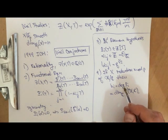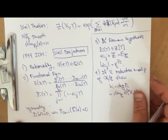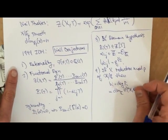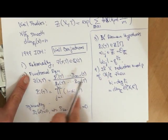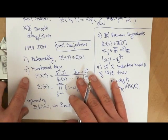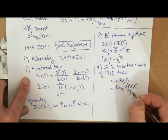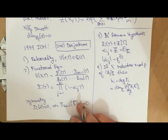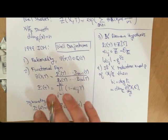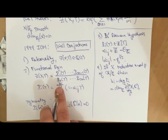So there are four conjectures. Weil wanted a cohomology theory cooked up to look like singular cohomology, whose properties would imply these conjectures. For example, the functional equation comes from Poincaré duality.